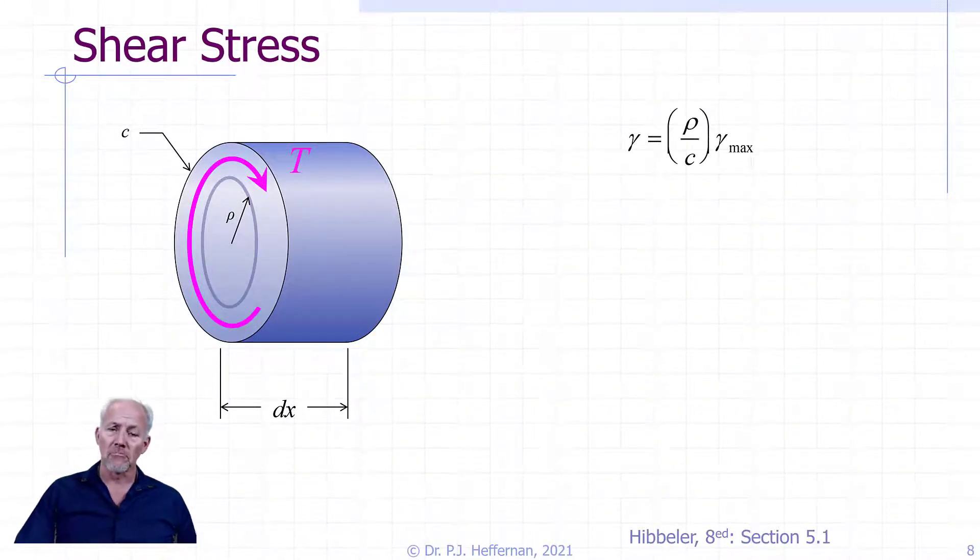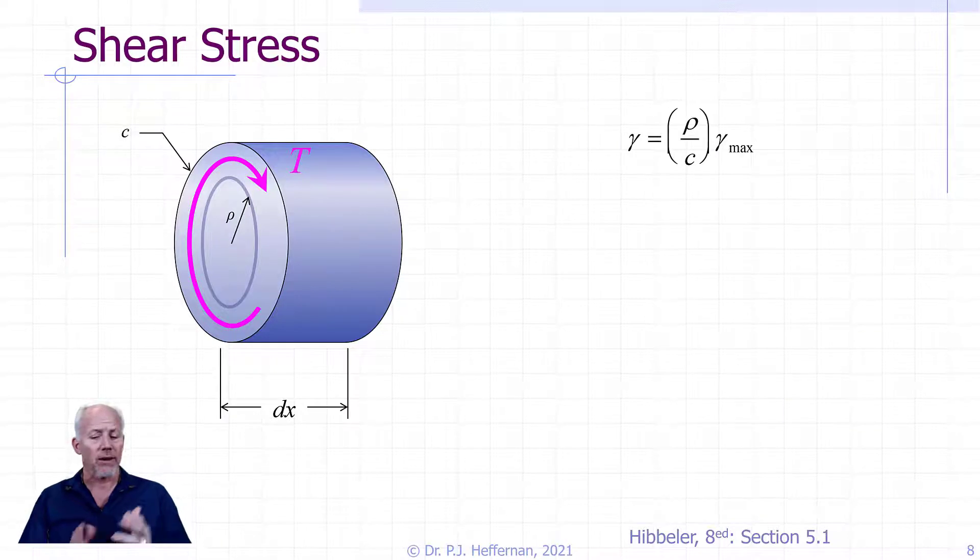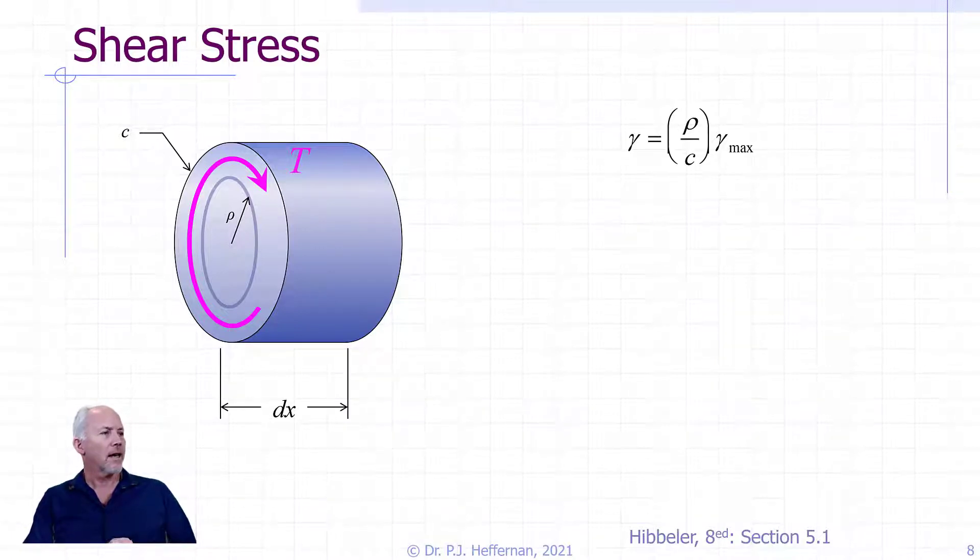So what about shear stress? We've talked a little bit about shear strain, doing things a little bit backwards or in reverse order than the last time. So let's talk a little bit about shear stress. So we have our slice, Dx. We have an internal torque applied on its face. And of course we're talking a distance rho, absolute radius of the section is C.